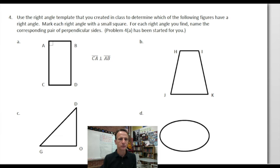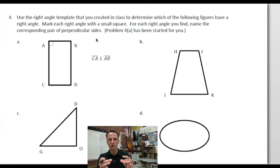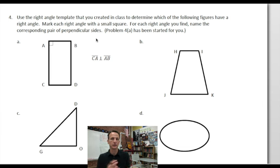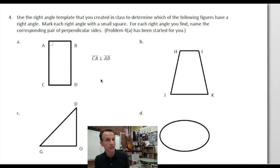In number four, we're going to use the right angle template that you created in class — that was the circle you folded up and created a cross in the middle, which gave you right angles. If you don't have that, you could fold any size and shape piece of paper in half twice and end up with right angles, or just use the corner of a book or something.